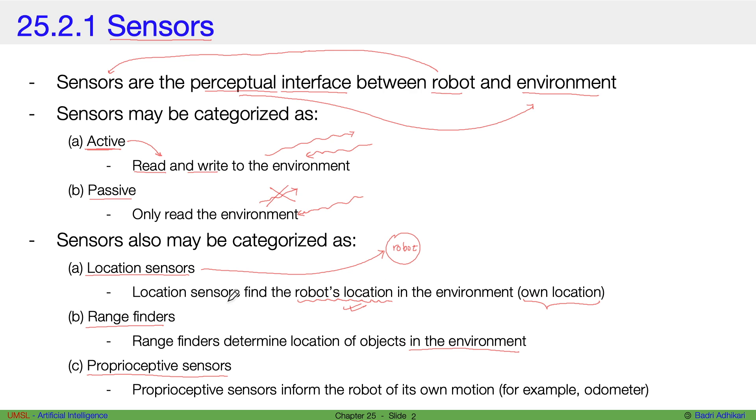Proprio-receptive sensors, on the other hand, are the kinds of sensors that inform the robot about its own motion. For example, the odometer in a car is an example of a proprio-receptive sensor.